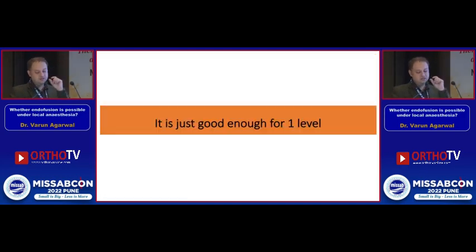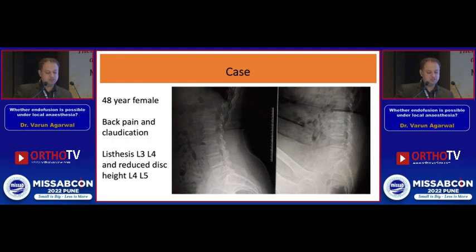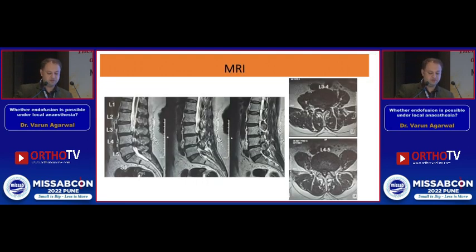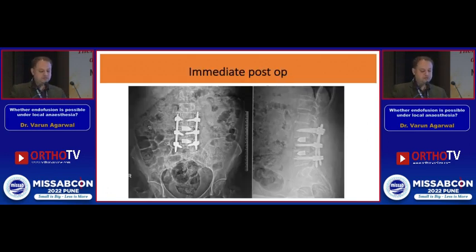Another question: is this good enough for only one level? Can we do more? This is another of my cases — a 48-year-old female presenting with back pain and claudication, listesis at L3-4 and reduced disc space height at L4-5. This is her MRI, and she has been fixed at both levels through this local anesthesia technique.